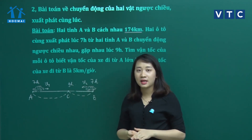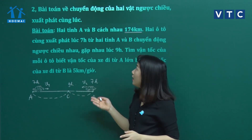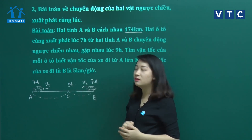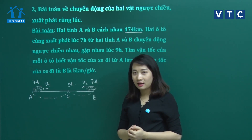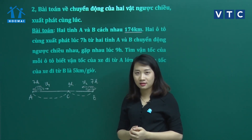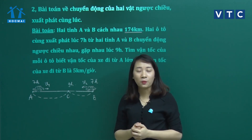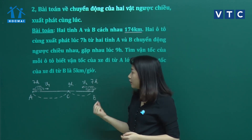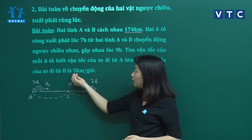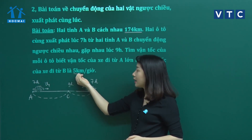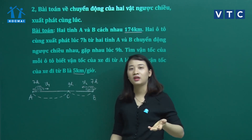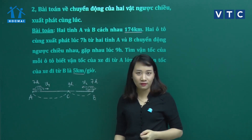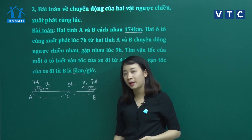Thời gian đi từ lúc xuất phát 7 giờ đến lúc gặp nhau 9 giờ là 2 giờ. Trong 2 giờ này, xe thứ nhất hoàn thành đoạn AC, xe thứ 2 hoàn thành đoạn CB, tổng quãng đường là AB = 174 km. Lấy 174 chia cho 2 giờ ta có tổng vận tốc của 2 xe. Khi có tổng vận tốc và hiệu vận tốc là 5 km/h, ta tính được vận tốc của từng xe.